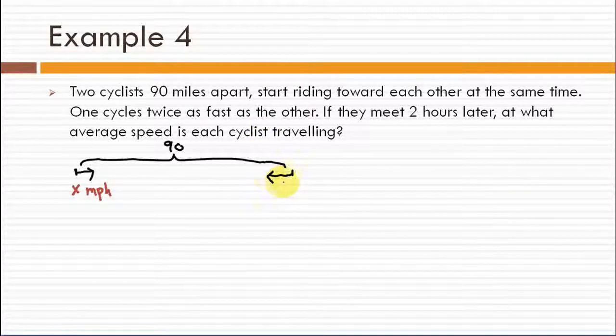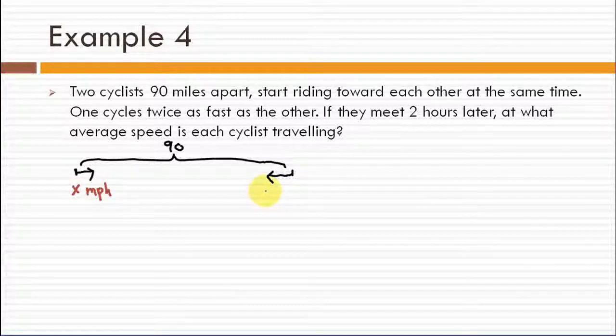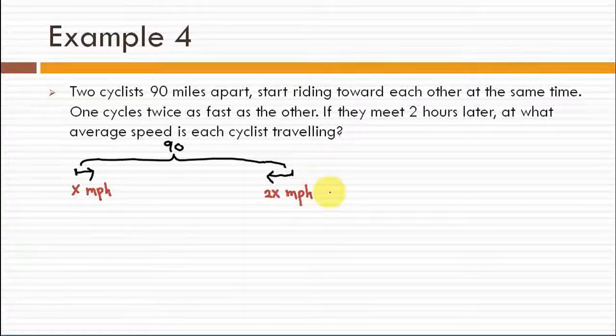The speed of this cyclist will be twice of x, which is 2x miles per hour.